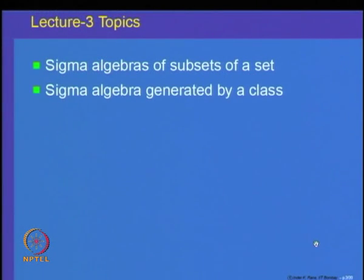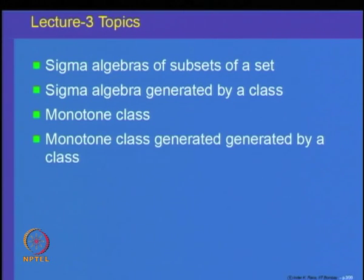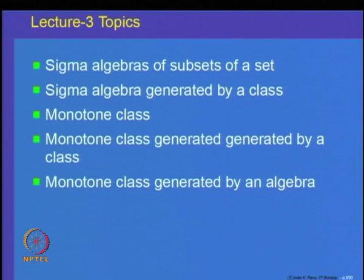Welcome to lecture 3 on measure and integration. We had started looking at the concept of algebra of subsets of a set X. We will look at some more properties of that today, and after that we will start looking at sigma algebras of subsets of a set, sigma algebras generated by a class of subsets, and then what is called a monotone class and the monotone class generated by an algebra.